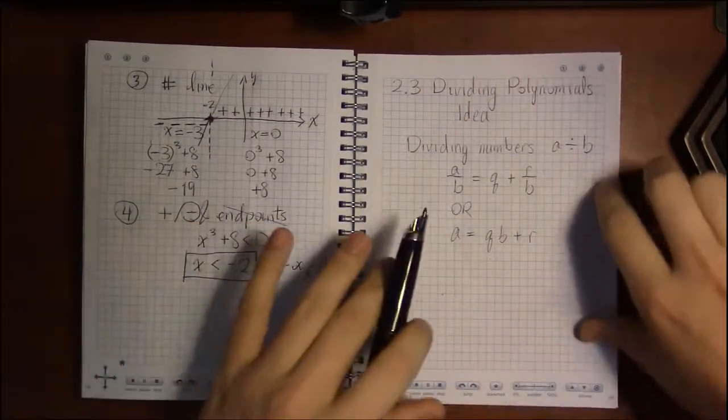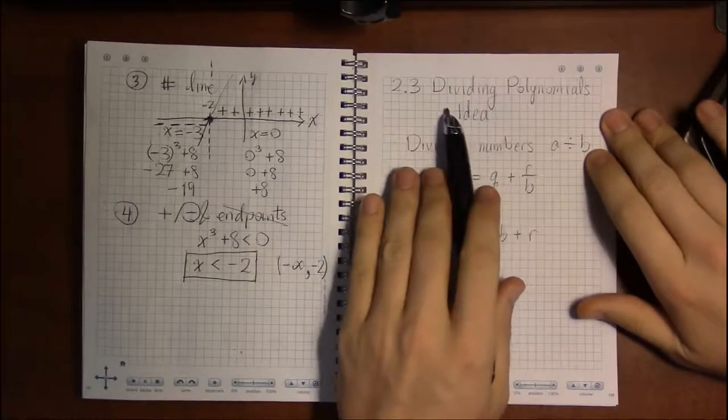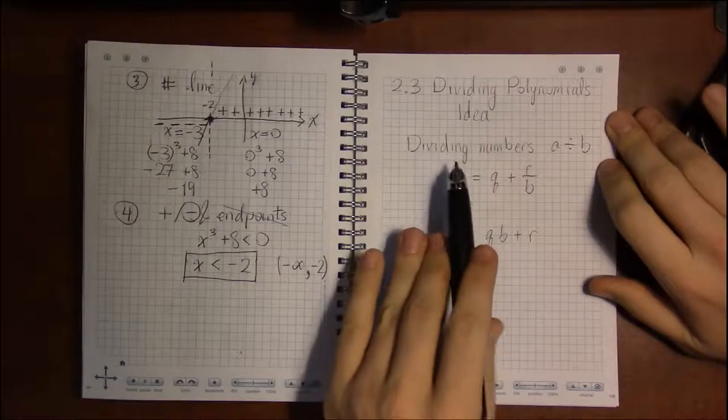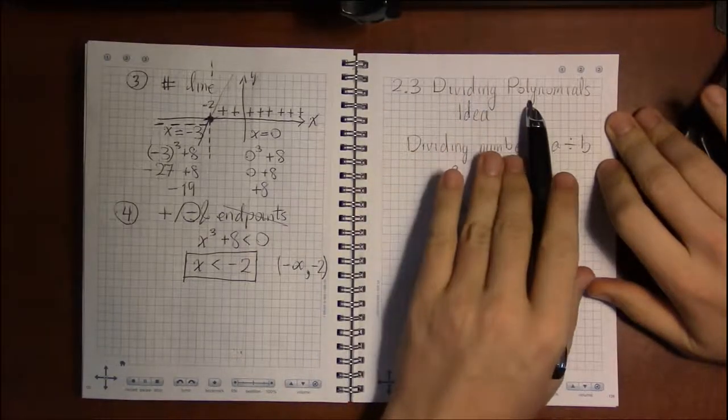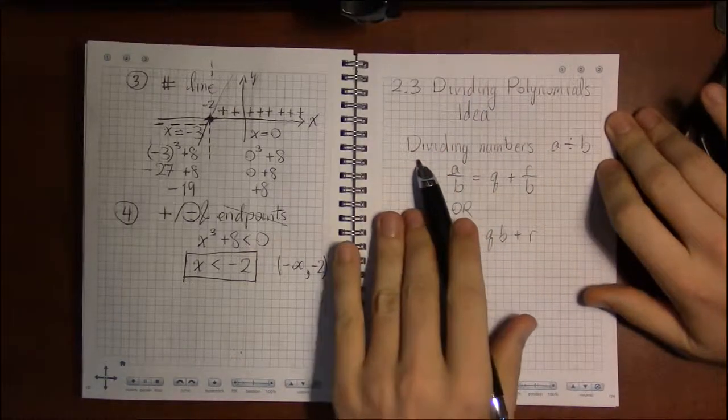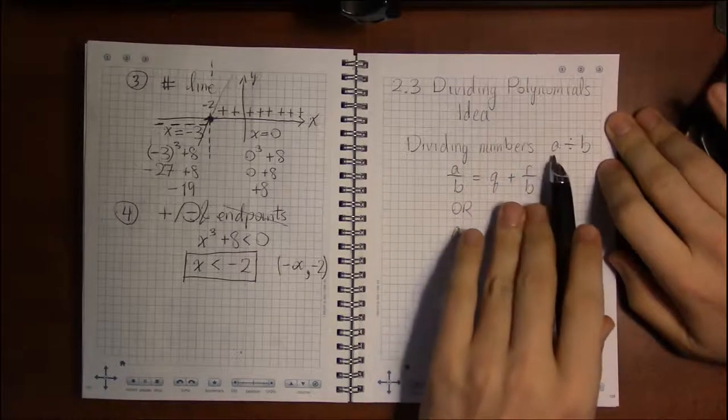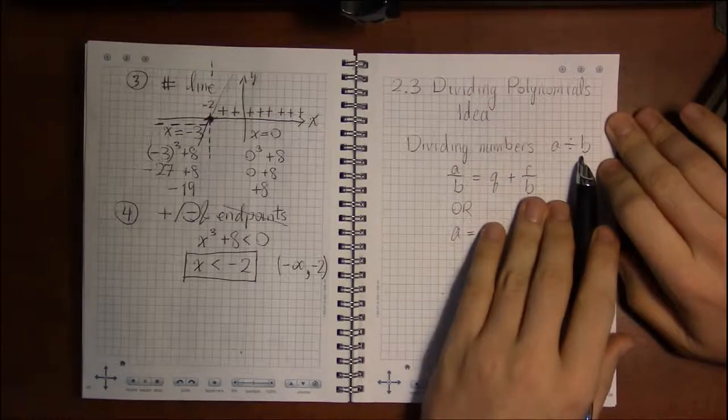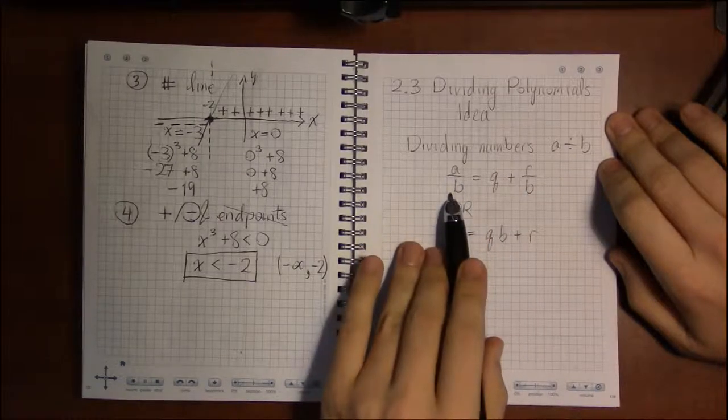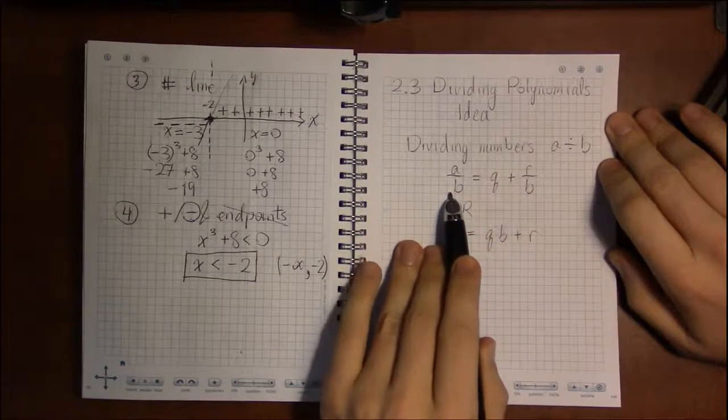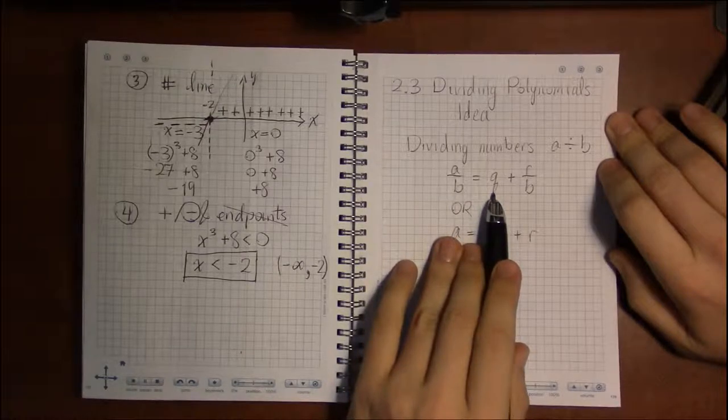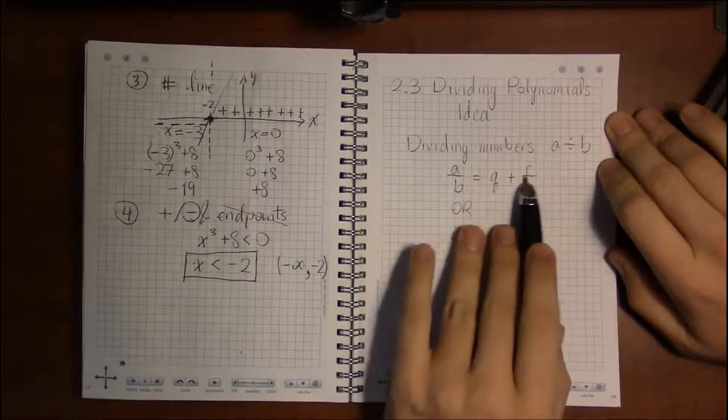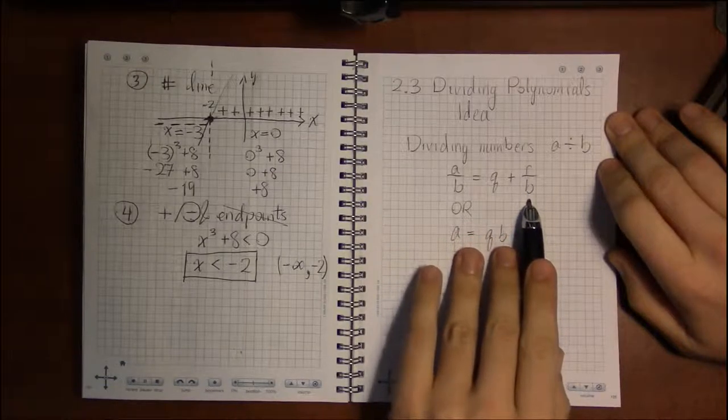All right, so we're going to talk about section 2.3, dividing polynomials. To do this, let's take a step back and look at dividing numbers. If we're going to do A divided by B, in general we come up with the following: that A divided by B is some quotient plus a remainder, which remains divided by B.